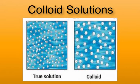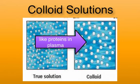A type of aqueous solution in the body is a colloid solution where the large organic molecules, such as proteins, are suspended in a watery solvent called plasma. We will refer to colloid solutions when we discuss the blood.